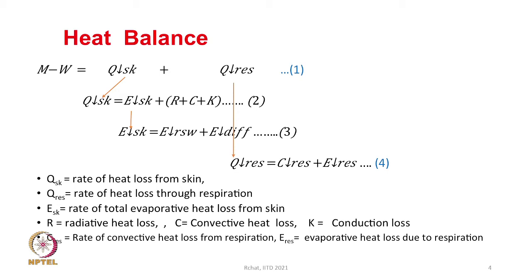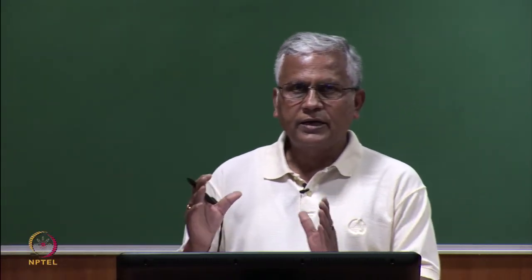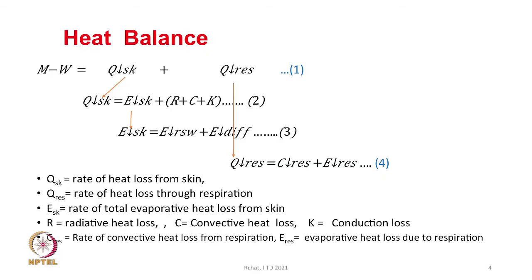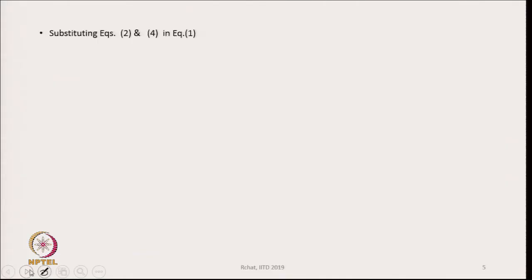If we want to calculate the total heat loss from the body, we have to find all these losses one by one and sum them, then check whether the right-hand side equals, is more than, or less than the left-hand side.